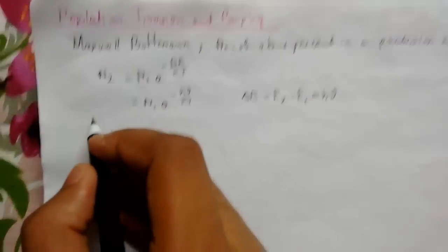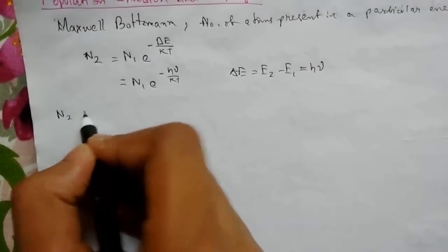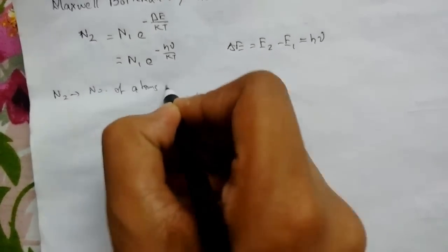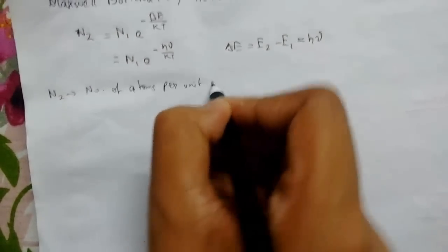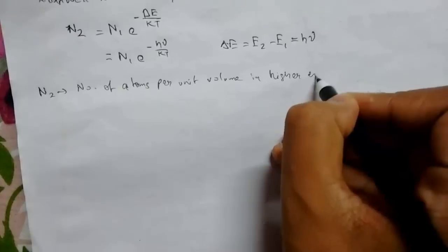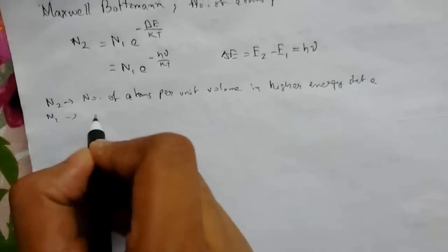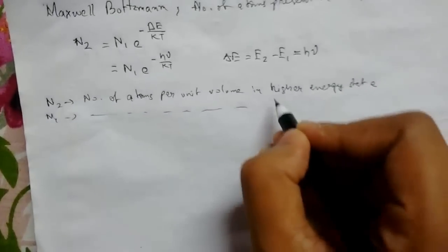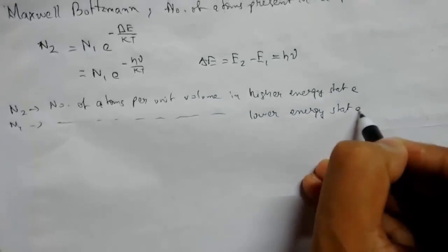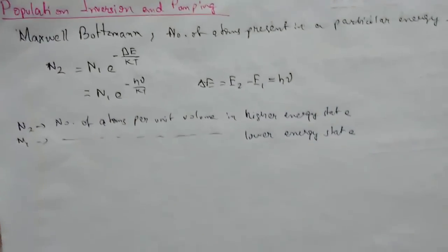Here we see that N2 is the number of atoms per unit volume in the higher energy state, and N1 is the same in the lower energy state. This is the Maxwell Boltzmann law.